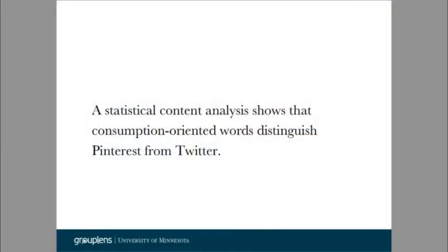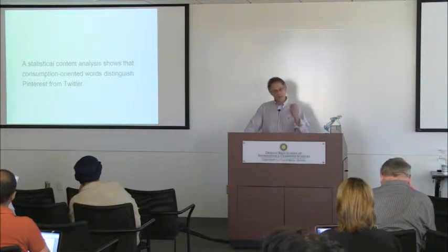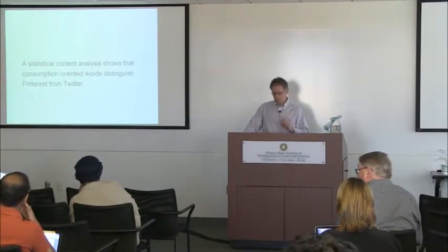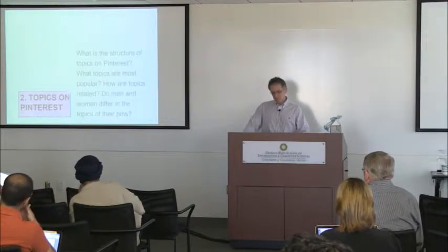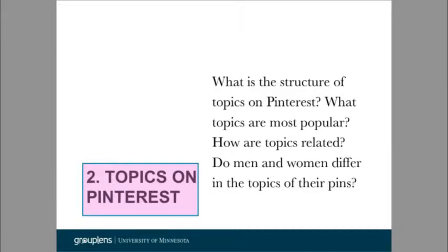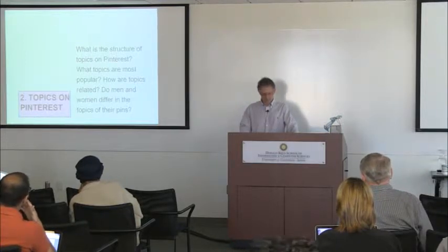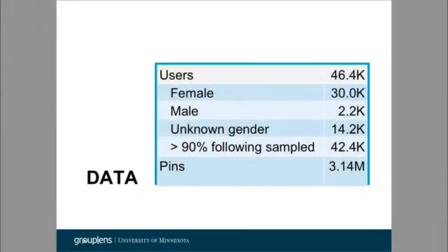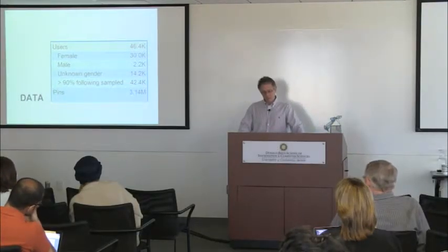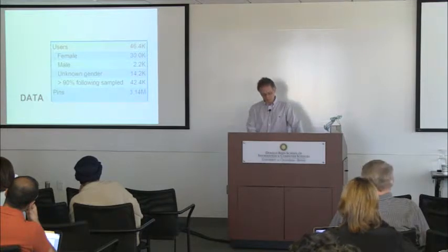To summarize this first analysis: statistical content analysis shows that consumption-oriented and aspiration-oriented words distinguish Pinterest from Twitter. The next analysis looked at topics on Pinterest. We wanted to understand the structure of topics, what topics are most popular, how topics are related, and whether men and women differ in the topics they pin. For this analysis we did another crawl of Pinterest, winding up with a dataset of 46,000 users — about 30,000 female and a couple thousand male — and over 3 million pins.